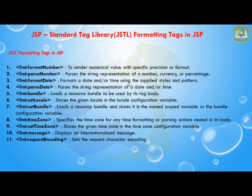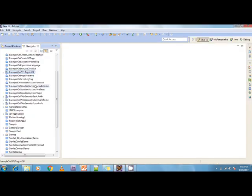The next tag is fmt:requestEncoding, which sets the request character encoding. There are different character encodings available — UTF-8, UTF-16, UTF-64 — and if you want to specify which character set to use for encoding, you can mention it in the requestEncoding tag. These are the different formatting tags available in JSTL.